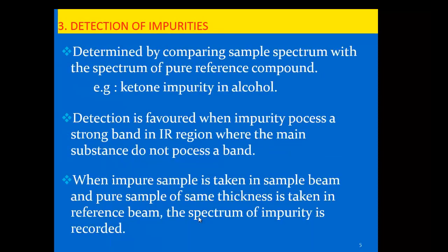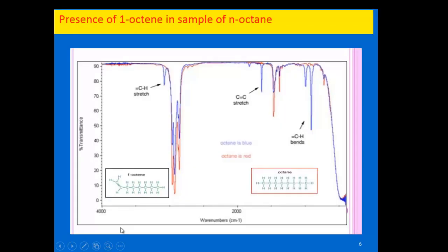Third, we can easily detect impurities present in a sample using IR spectroscopy, by comparing the sample spectrum with the spectrum of a pure reference compound. Detection is favored when the impurity shows a strong absorption band; otherwise it is difficult to detect if the impurity is in very small amounts. The impure sample is placed in the sample beam and a pure sample of the same thickness is placed in the reference beam, so the spectrum of the impurity is recorded.